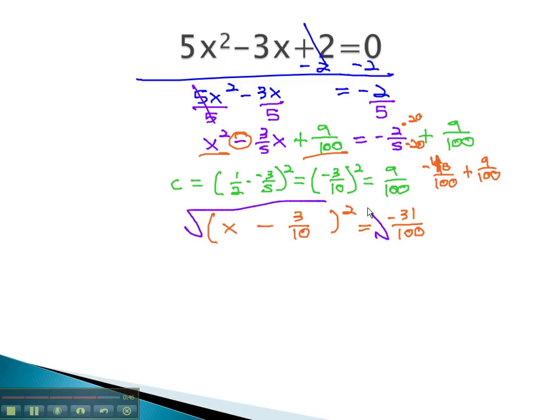We're now ready to take the square root of both sides, so that square and square root undo each other, and we get x - 3/10 equals... because there's a negative, it will come out as an i, root 31.